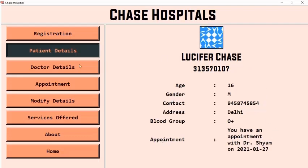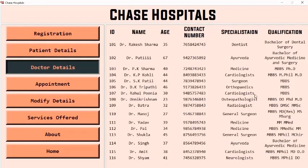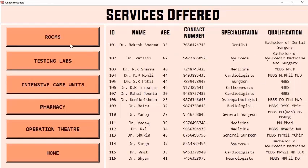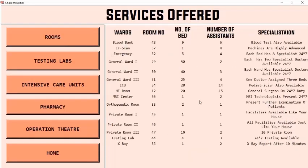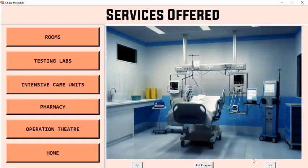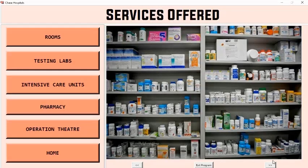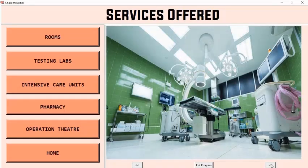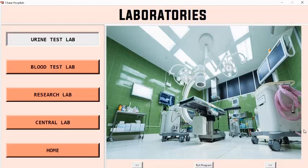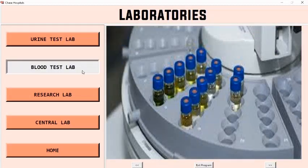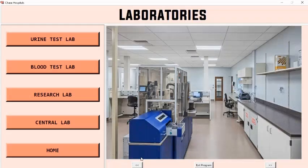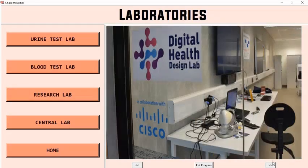Now let us see the doctor details section. We have some of the best doctors. You can view the doctor's ID, contact number, specialization, and qualification. In the services offered section, there are various hospital rooms with their specialization and the number of assistants assigned. In the ICU section, you can view the infrastructure. The pharmacy section lists available medicines, and an operation theater is also present. In the testing lab section, there are various labs ranging from urine test labs to central labs, all equipped with high-efficiency modern machines.